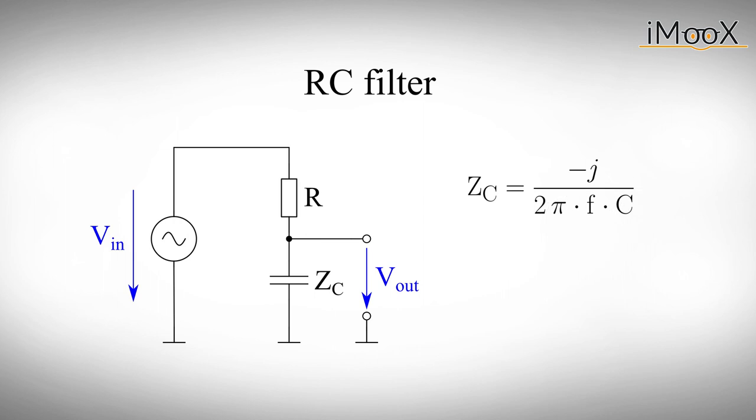Let us forget about this strange constant j for the moment and let's focus on what the equation tries to tell us. Namely, that the impedance gets smaller with higher capacitance and, more importantly, it gets smaller with higher frequencies. And that's exactly the attribute we'll be using to build our filter.